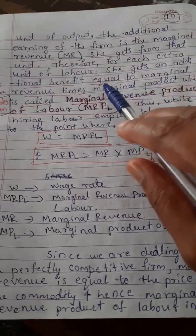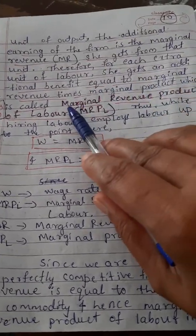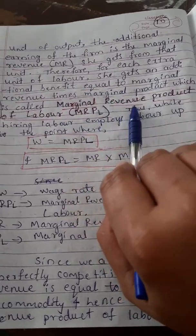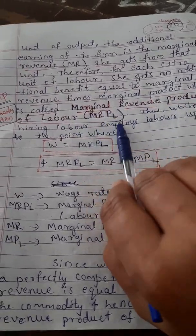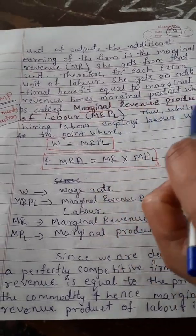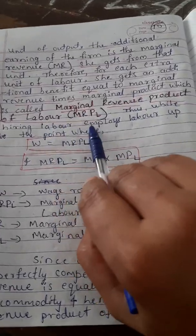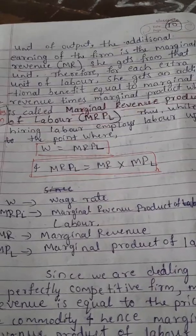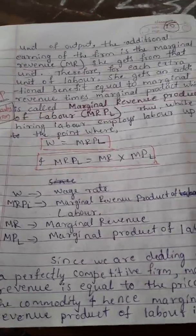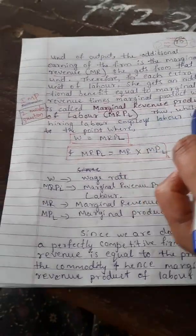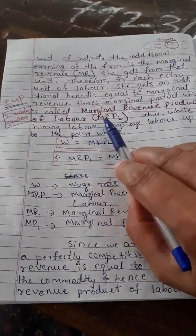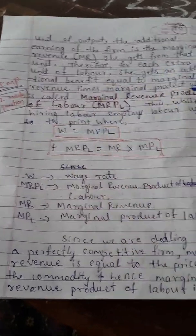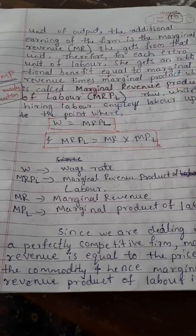For each extra unit of labor hired, the additional benefit the firm gets is equal to marginal revenue multiplied by the marginal product of labor, which is called the Marginal Revenue Product of Labor, written as MRPL. This is a two-marks question — they may ask the meaning of MRPL.